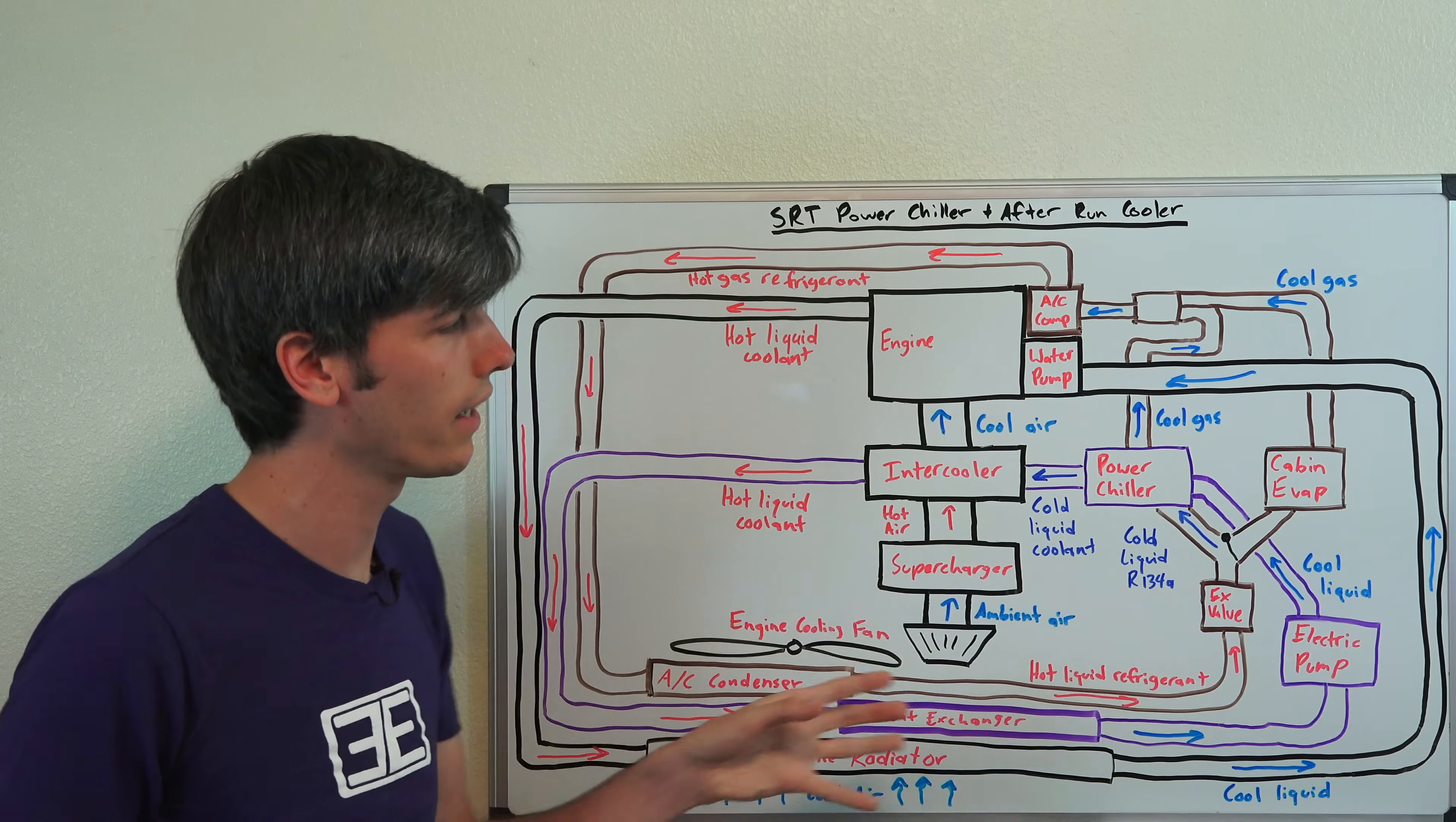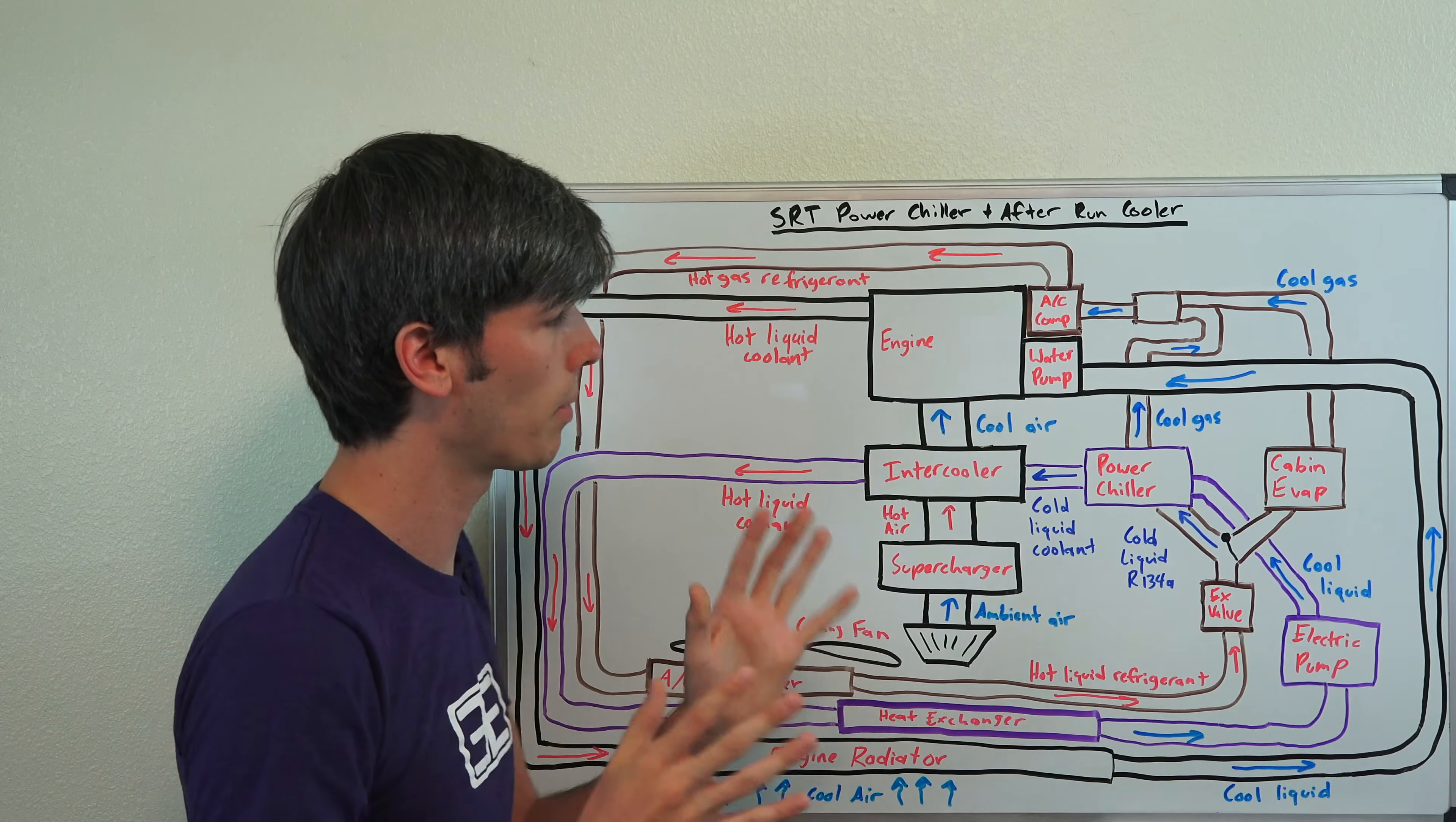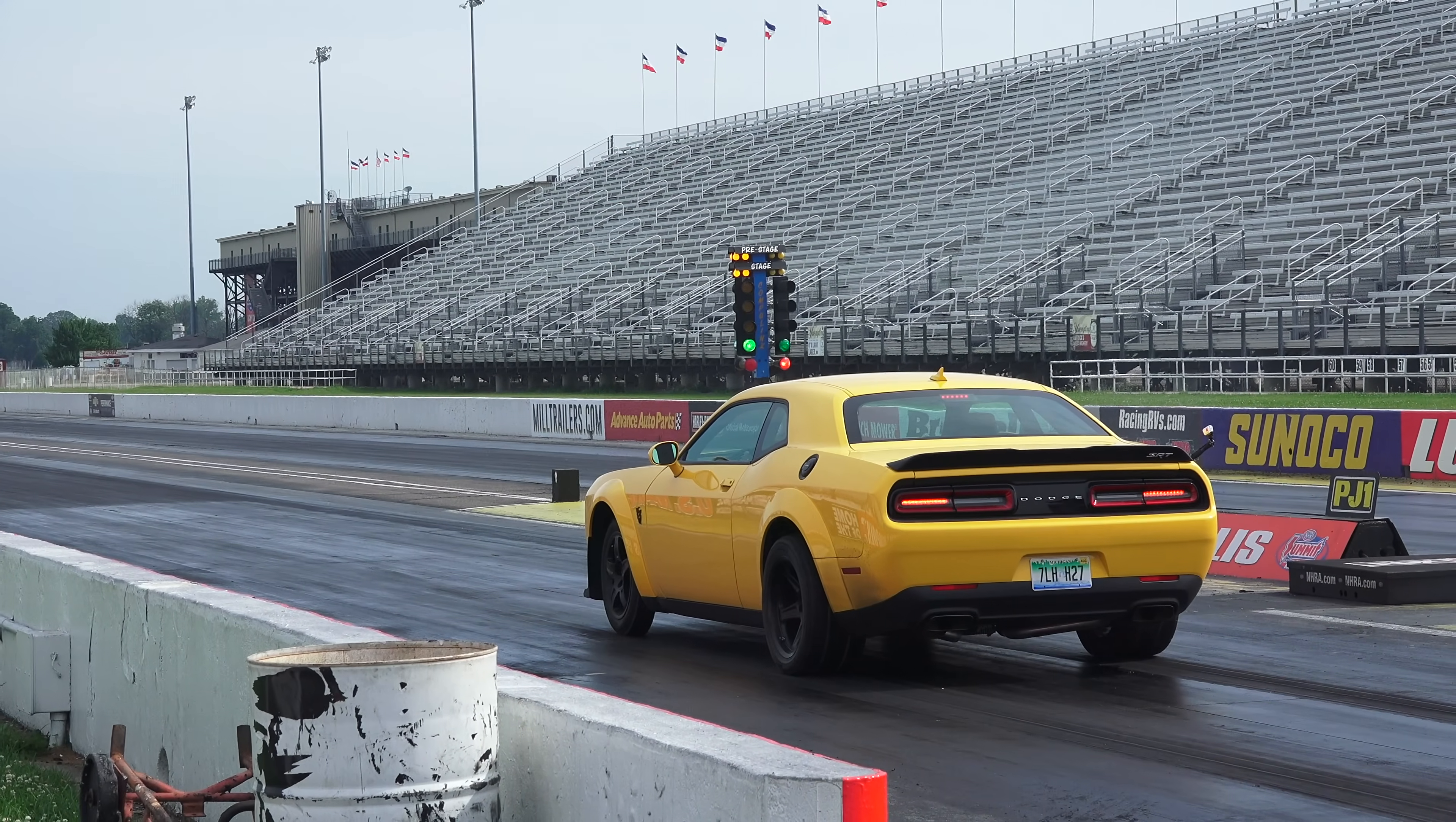the power chiller alone running that AC system can reduce the temperature of the air by 10 degrees Celsius and the entire system using the heat exchanger and the electric pump, the entire system can lower it by 45 degrees Fahrenheit or a differential of 25 degrees Celsius. That's their claims on the amount that they can reduce this intake air temperature going into the engine. Now,